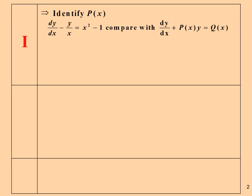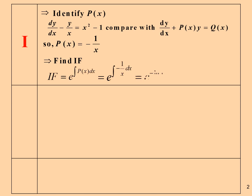We must identify the function P(x) from the equation. We find that P(x) = -1/x. Next, we find the integrating factor from the formula, and we get 1/x.